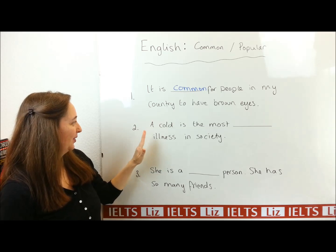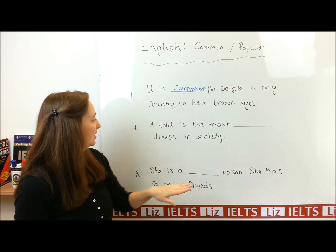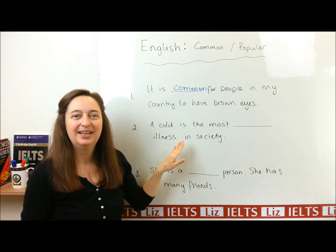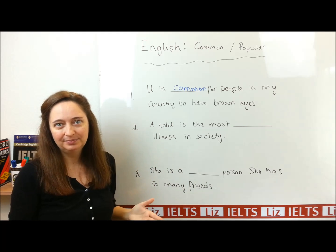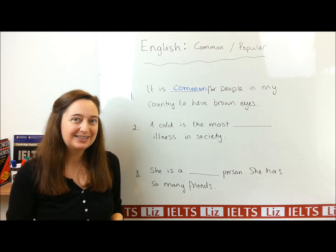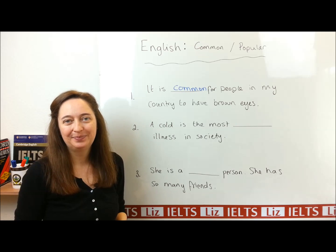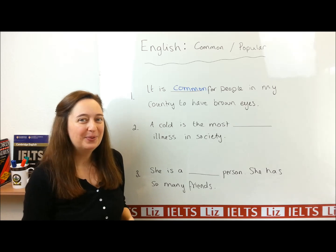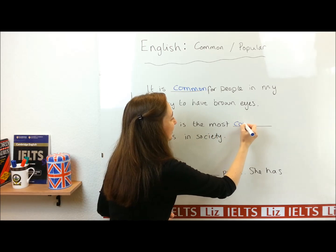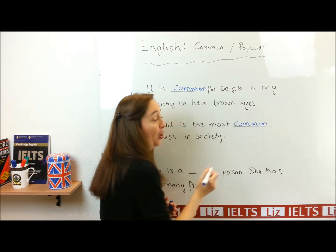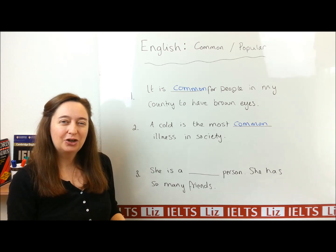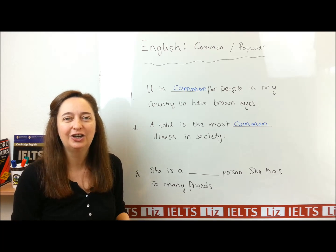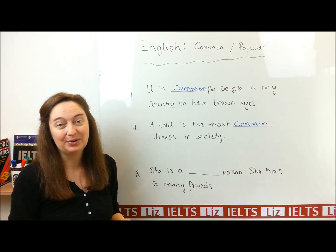Number two: 'A cold is the most ___ illness in society.' So, is this popular — do many people like it? Or is it common because it happens often? Well, again the answer is common. The cold is the most frequently occurring illness that we have.